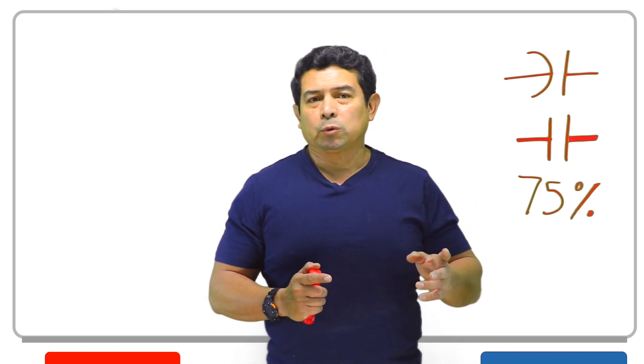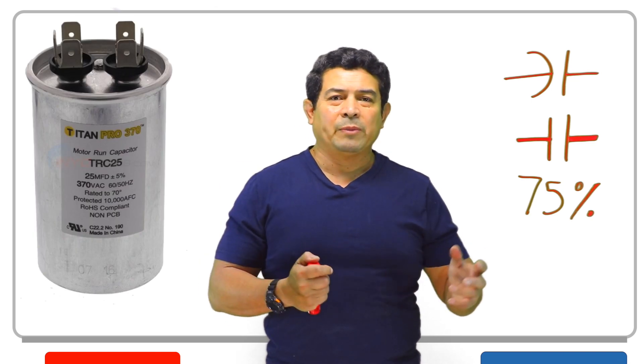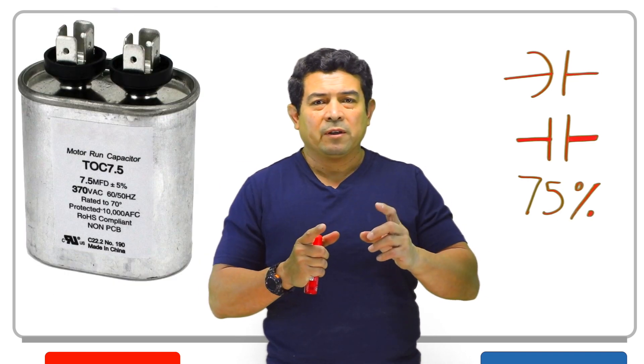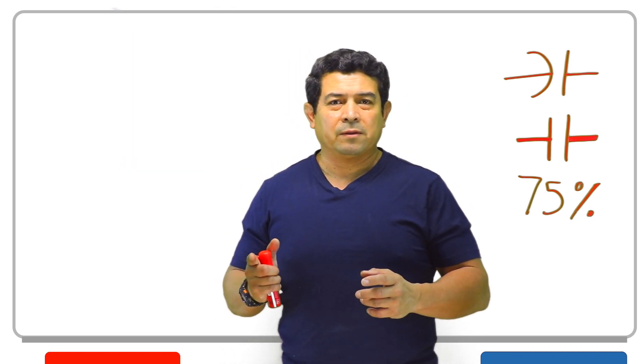Now, a long time ago, I was told that if it's a round shape, then it's going to be a start capacitor. If it's oval shaped, then it's going to be a run capacitor. Well, that's not so.